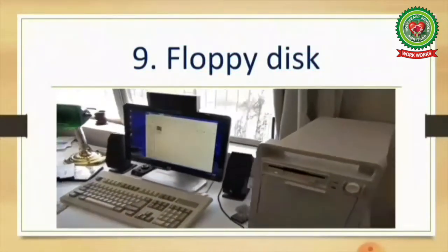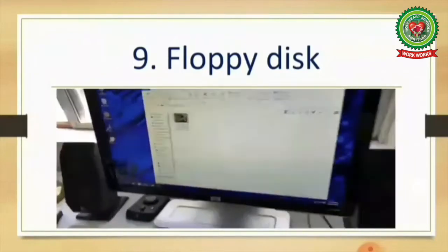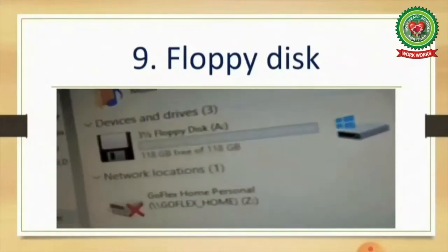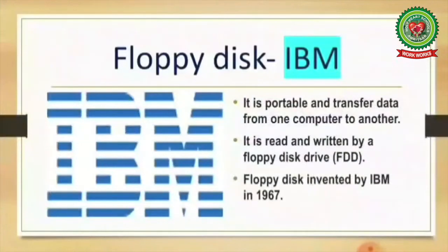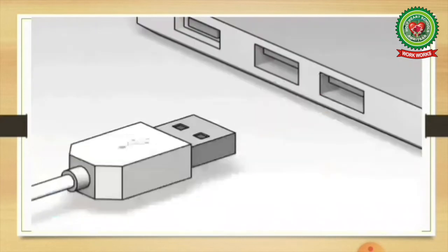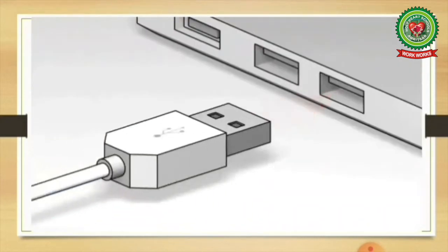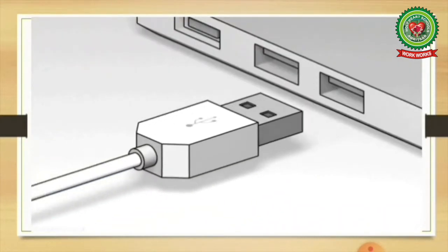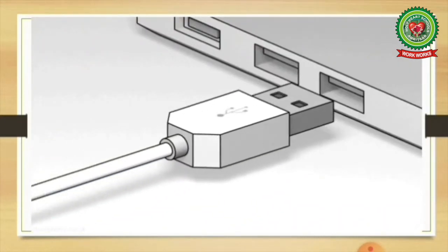The next invention is the floppy disk, which is portable and transfers data from one computer to another. It is read and written by a floppy disk drive. The floppy disk was invented by IBM in 1967. IBM is an American multinational company. Nowadays we use USB drives in place of floppy disks.